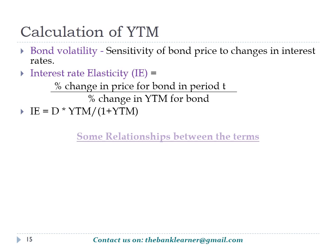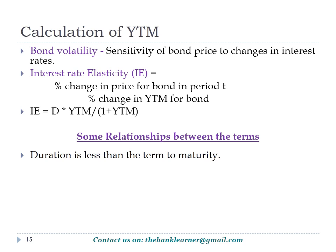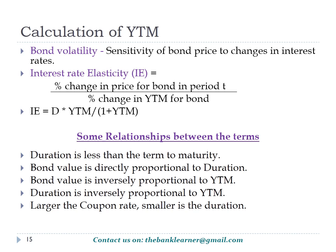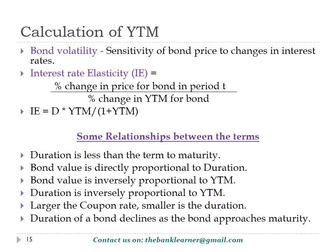Now let's look at some relationships between these terms. Duration is usually less than the term to maturity; both are equal only in the case of zero coupon bonds. The value of a bond is directly proportional to its duration and inversely proportional to YTM. A larger coupon rate results in a smaller duration of the bond. Additionally, the duration of a bond always declines as the bond approaches its maturity.